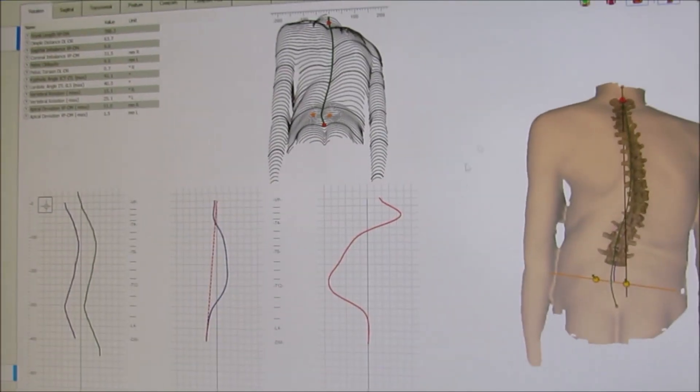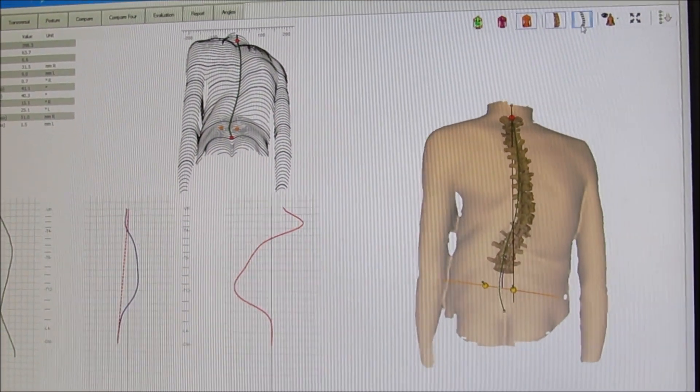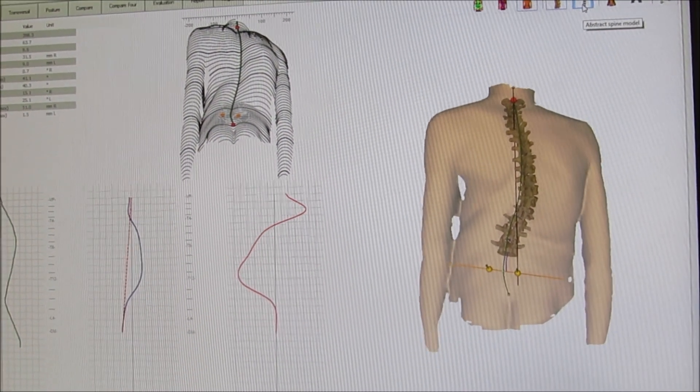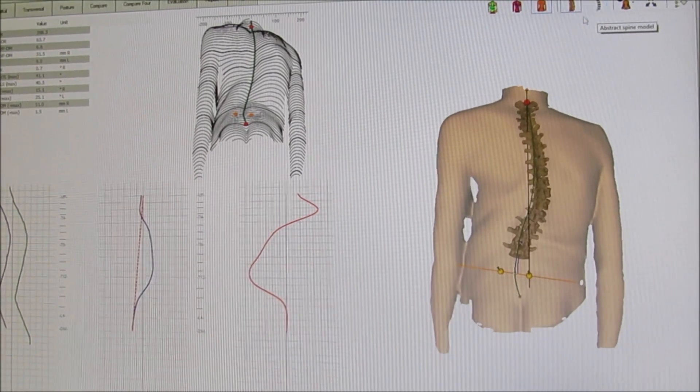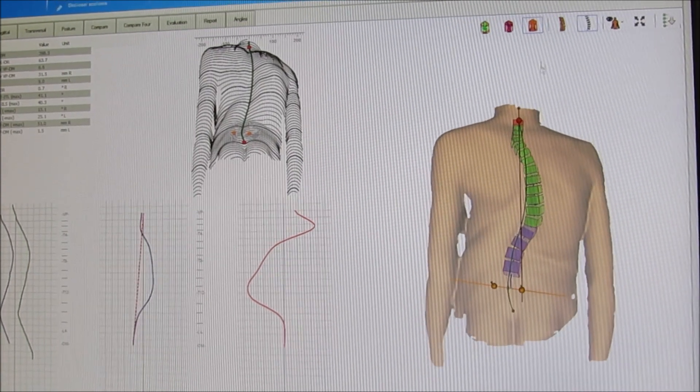And then it takes that and over here it creates a graphic representation of what the spine should look like based on that topography. So we can change this and see what it looks like with just blocks rather than the spine.